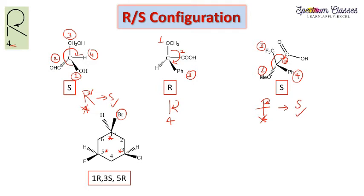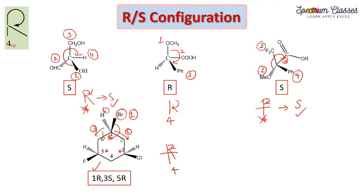For ring compounds, when deciding priority at a given carbon we count along the ring in both directions. At this carbon, chlorine is present on one path so that branch gets second priority and the other gets third priority. The fourth priority group is on the dashed line, so it is considered on the vertical line. Rotating 1, 2, 3 gives a clockwise rotation and I get R for this carbon.